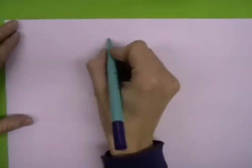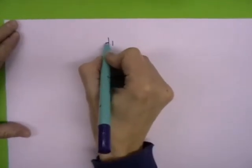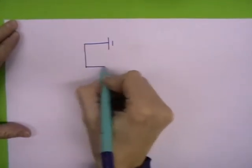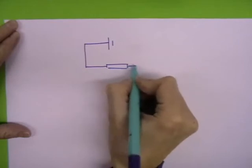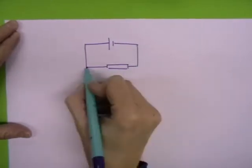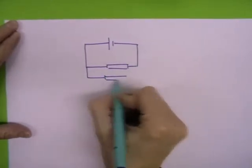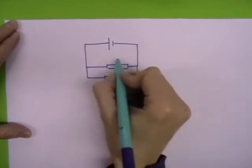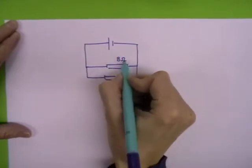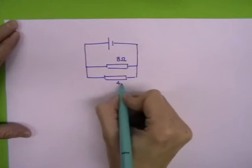This is another resistor in parallel question. I'm just going to draw it out here. If you have a power supply and you've got two resistors in parallel, one is 8 ohms and the other is 4 ohms.